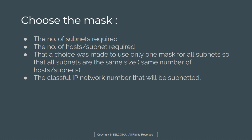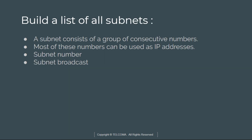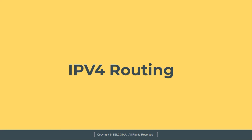To choose the mask, consider the number of subnets required and the number of hosts per subnet required. The design choice here is to use only one mask for all subnets so that all subnets are the same size, along with the classful IP network number that will be subnetted. Finally, to build a list of all subnets, note that subnets consist of consecutive numbers using the subnet number and broadcast address.